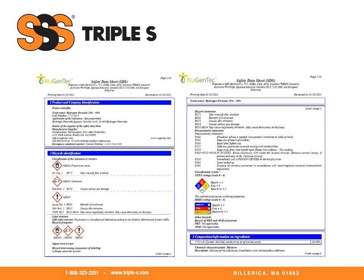We will now take a look at an example of a global harmonized system safety data sheet. In part one, product and company identification, we see the product being hydrogen peroxide 20 to 40%, along with the manufacturer's and supplier's name and emergency information. In section two, we see the classification of the substance with pictograms, warnings, and other label elements.